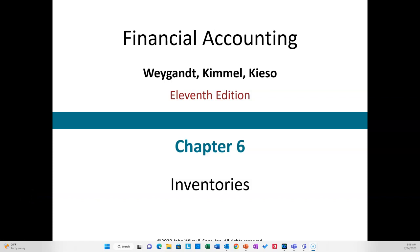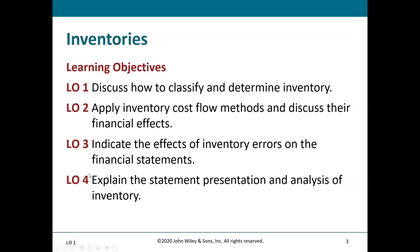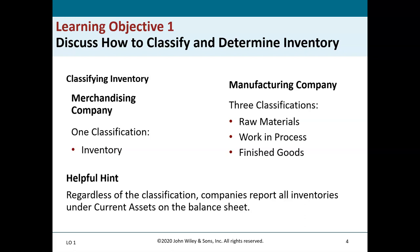In this video we're going to cover chapter 6, which will build on what we learned in chapter 5 on merchandising activities, but focus more on inventories. The learning objectives for this chapter are: discuss how to classify and determine inventory, apply inventory cost flow methods and discuss their financial effects, indicate the effects of inventory errors on the financial statements.